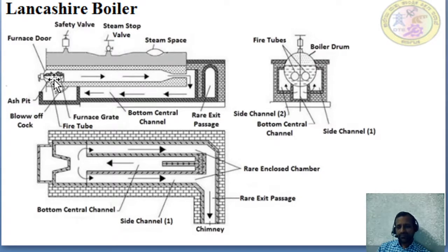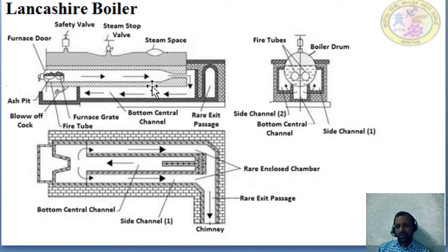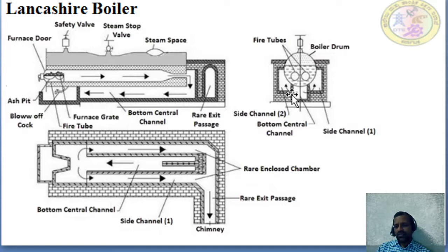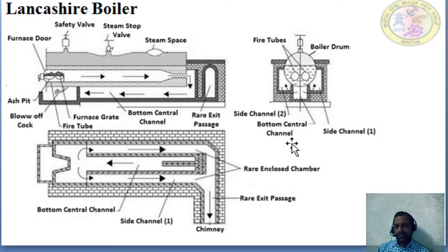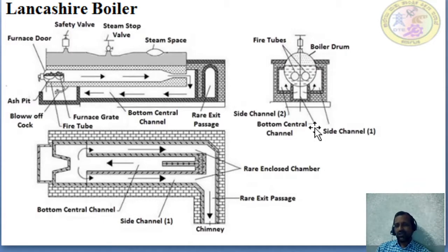This is the furnace grate. On top of the furnace grate you feed coal, which is fired there, and flue gases are generated. These flue gases flow through the fire tubes. In the side view there are two fire tubes. The flue gases flow through them and escape through the bottom central channel, then enter side channel 1 and side channel 2. About 90 percent of heat transfer takes place in the bottom central channel, and 8 to 10 percent in the side channels.